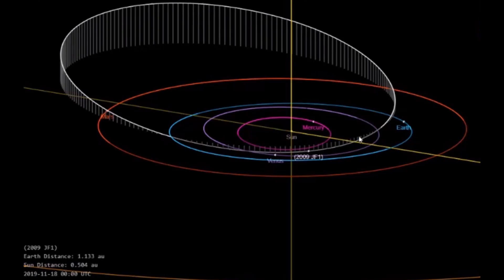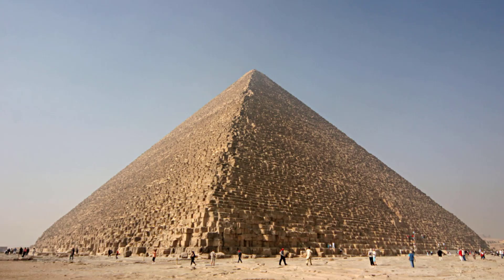Asteroid JF1 is heading towards our planet and there is a slight chance that the space rock could collide with Earth. The asteroid has a diameter of over 420 feet, roughly the size of the Great Pyramid of Giza in Egypt.